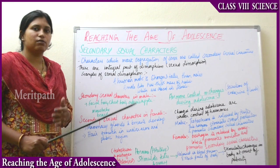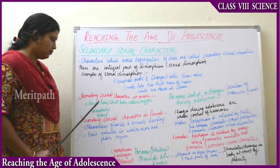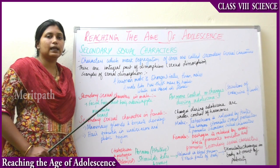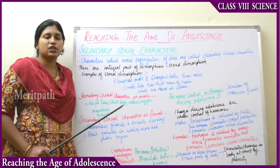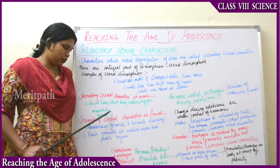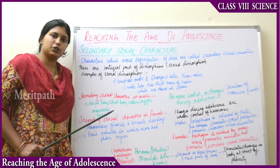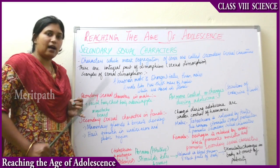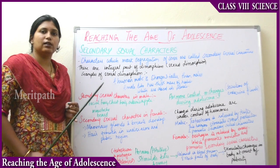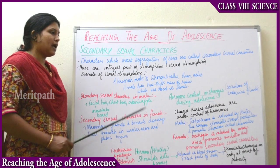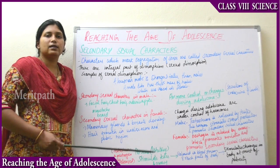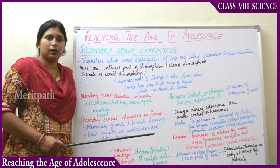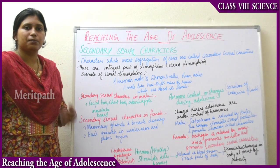So what secondary sexual characters do we observe in boys, in teenagers? Facial hair develops in the form of moustache and beard — a small thin hairline starts developing above the upper lip. On the cheeks also, facial hair starts to develop. Then chest hair develops over the chest, as well as in the underarms and the pubic region. Adam's apple is also observed in some boys — it is the projection of the voice box or larynx, observed at the onset of puberty.